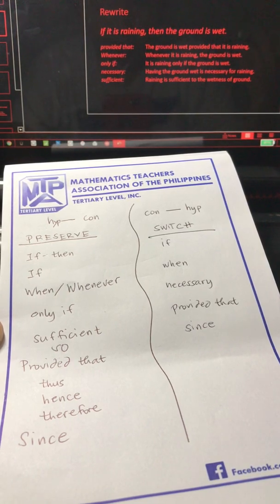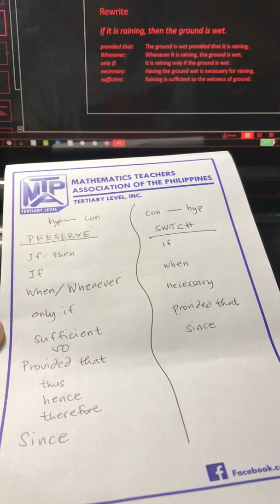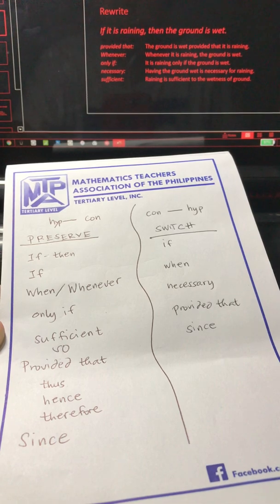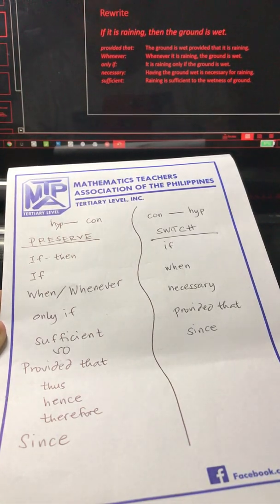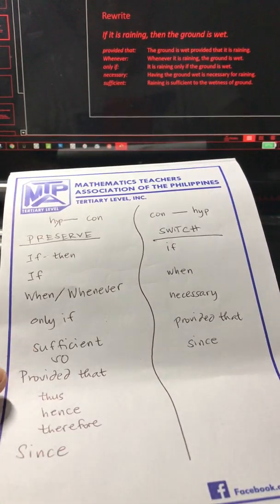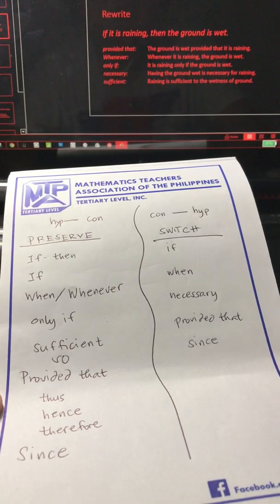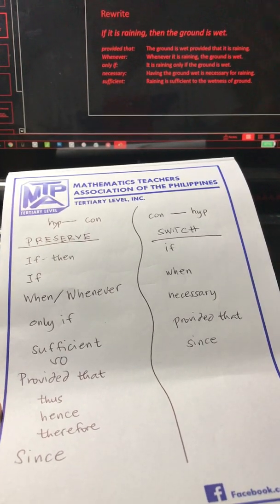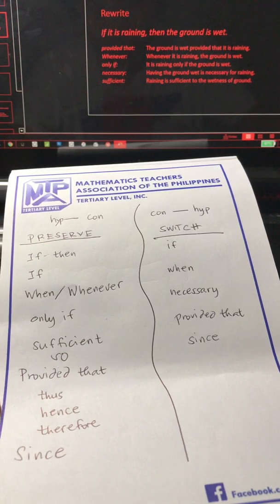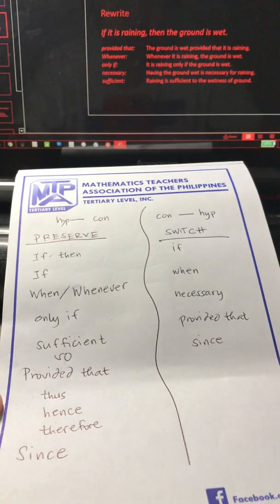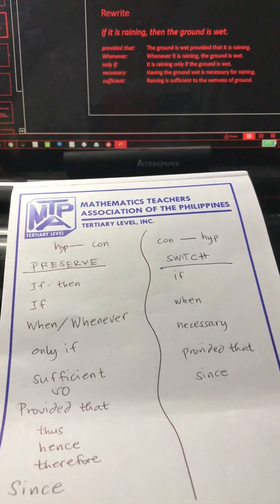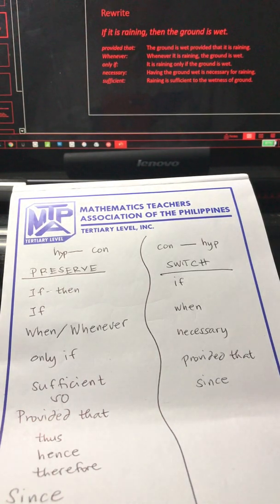Whenever you are to rewrite the conditional statement, identify first what the hypothesis is and what the conclusion is, so that it will be easier to rewrite the given statement. In this example, our signal phrase is the tandem if-then. Note that if-then is under the preserve part, so it will always be: if-hypothesis, then-conclusion.